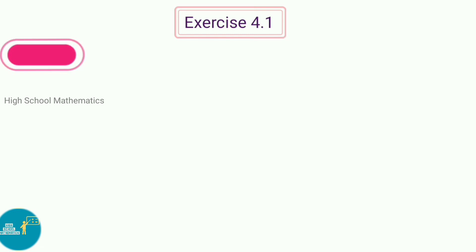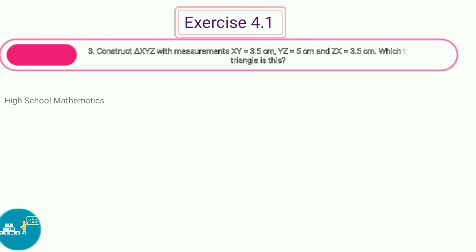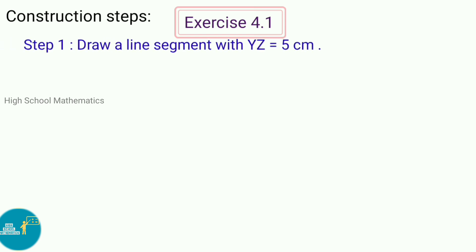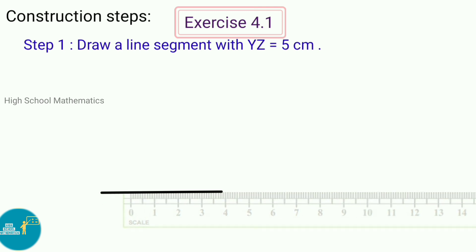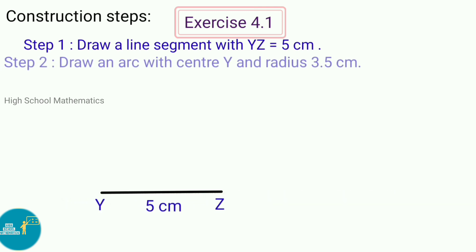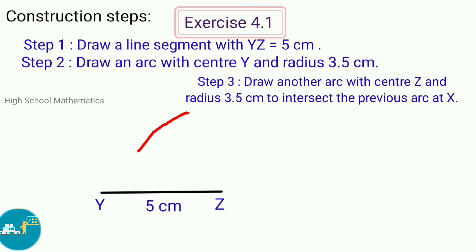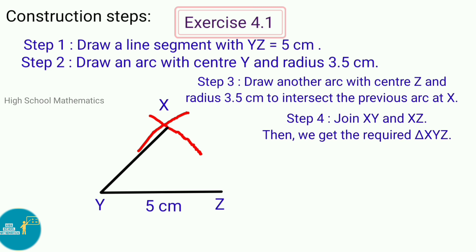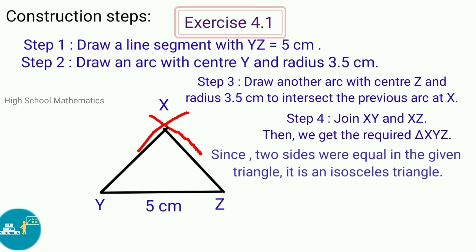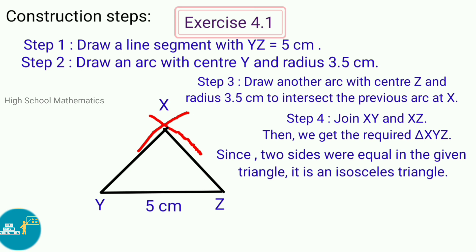Third sum: Construct triangle XYZ with measurements XY equal to 3.5 cm, YZ equal to 5 cm, and ZX equal to 3.5 cm. Which type of triangle is this? Construction steps — Step 1: Draw a line segment with YZ equal to 5 cm. Step 2: Draw an arc with center Y and radius 3.5 cm. Step 3: Draw another arc with center Z and radius 3.5 cm to intersect the previous arc at X. Step 4: Join XY and XZ. Then we get the required triangle XYZ. Since two sides are equal in the given triangle, it is an isosceles triangle.